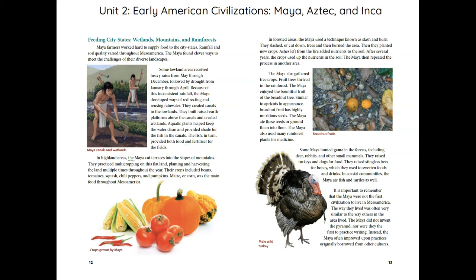In highland areas, the Maya cut terraces into the slopes of mountains. They practiced multi-cropping on this flat land, planting and harvesting multiple times throughout the year. Their crops included beans, tomatoes, squash, chili peppers, and pumpkins. Maize, or corn, was the main food throughout Mesoamerica. In forested areas, the Maya used a technique known as slash and burn — they slashed or cut down trees and then burned the area, then planted new crops. Ashes from the fire added nutrients to the soil. After several years, the crops used up the nutrients, and the Maya repeated the process in another area.